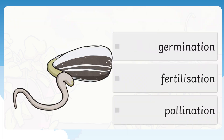What part of the life cycle is this — what's happening here? Is it germination, fertilization, or pollination? When the seed is just sprouting, it's germination.